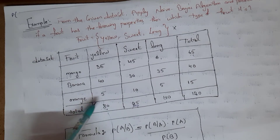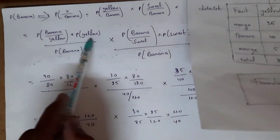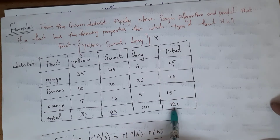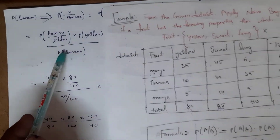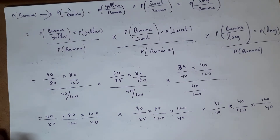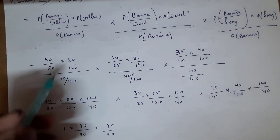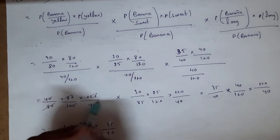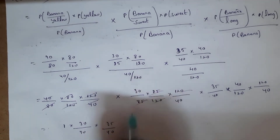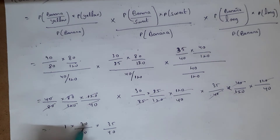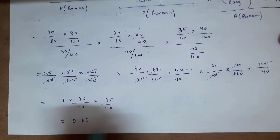For banana: P(banana|yellow) = 40/80. P(yellow) = 80/120. P(banana) = 40/120. After cancellations — 80 and 80 cancel, 120 and 120 cancel, 85 and 85 cancel, 120 and 120 cancel, 40 and 40 cancel, 120 and 120 cancel — it simplifies to 1 × 30/40 × 35/40. Calculating this gives a value of approximately 0.65 for banana.